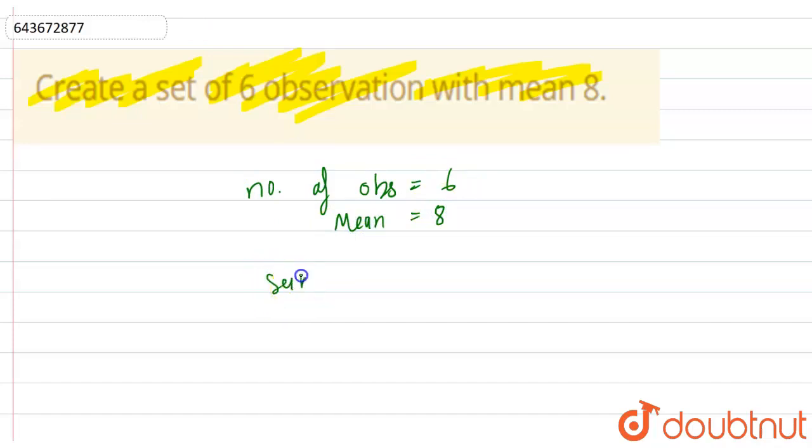So then the sum will be mean times number of observations. So sum should be 8 times 6, that is equal to 48. So sum should be 48.